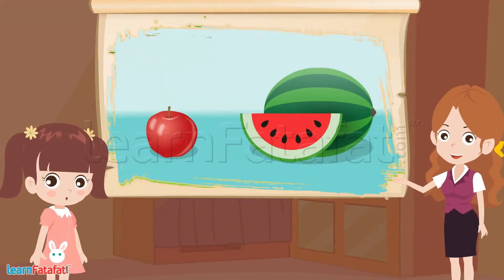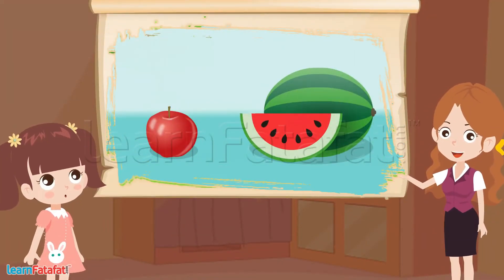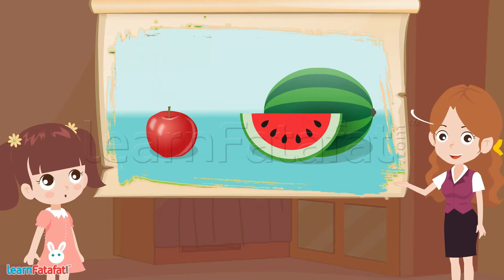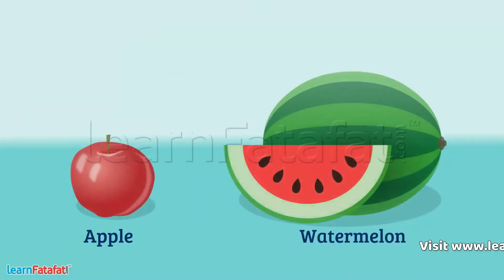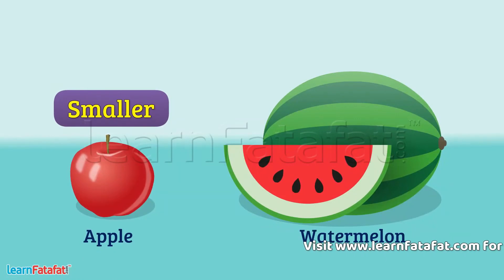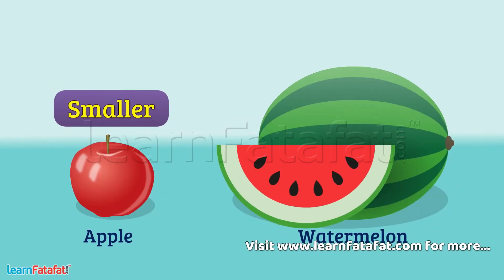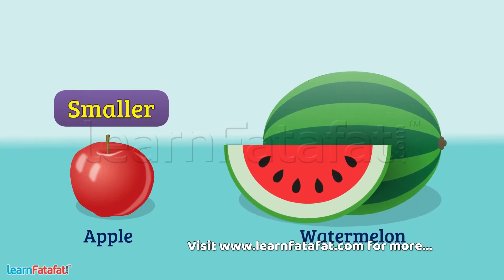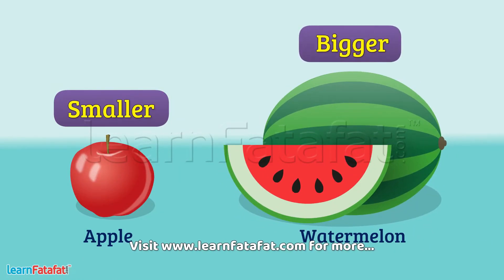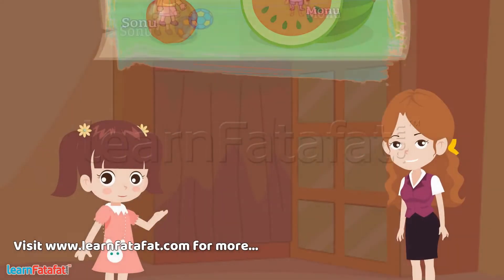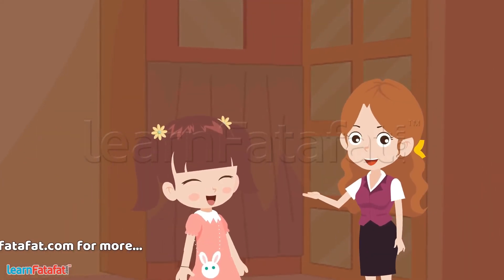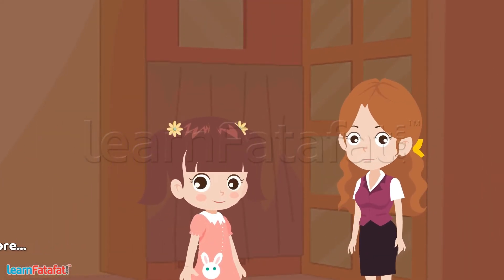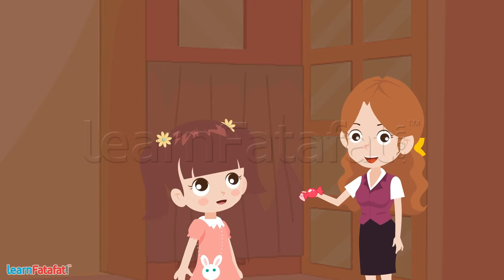Here are two fruits. So, can you tell me which fruit is the smaller? Apple is smaller than watermelon and the watermelon is bigger than the apple. Very good, Ruchi! Your all answers are right. So, have this chocolate.